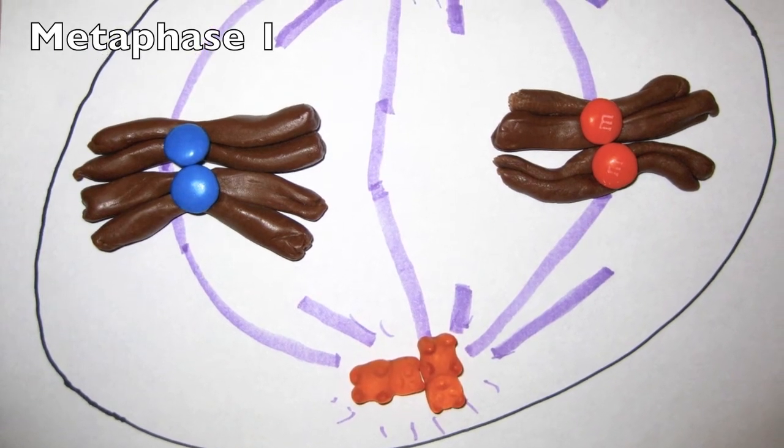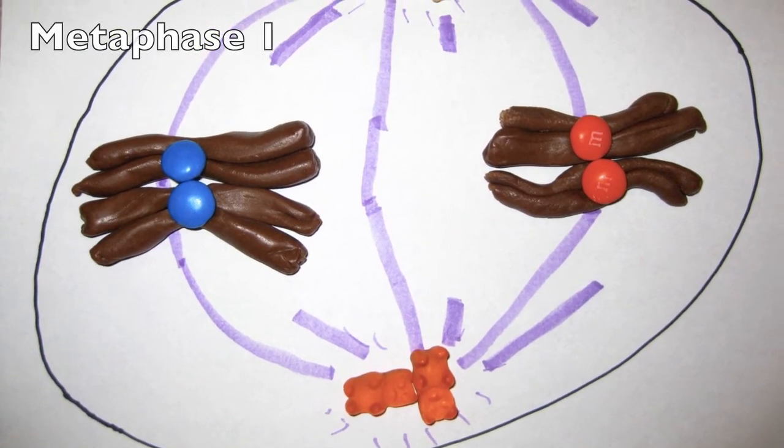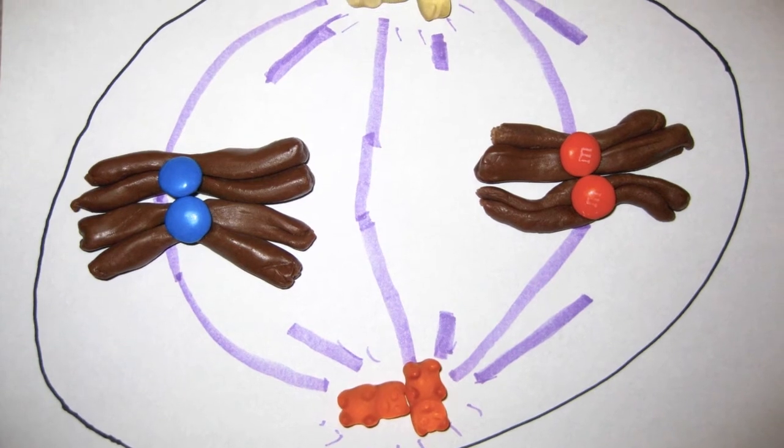In metaphase, homologous chromosomes line up along a metaphase plate. Microtubules grab the kinetochore of each homolog.